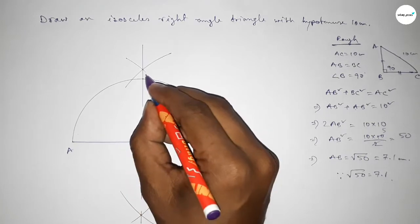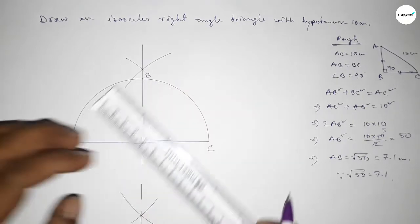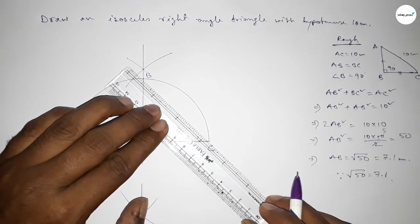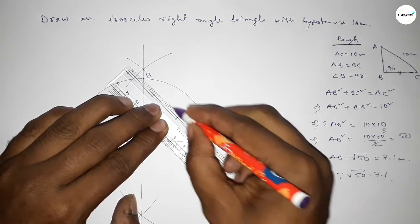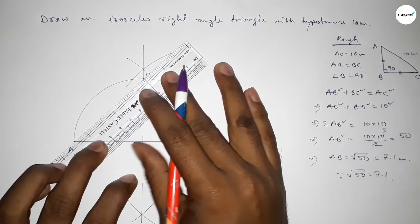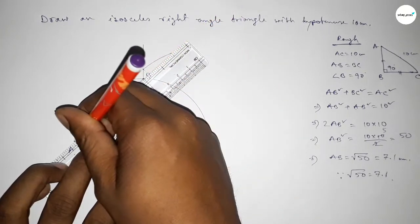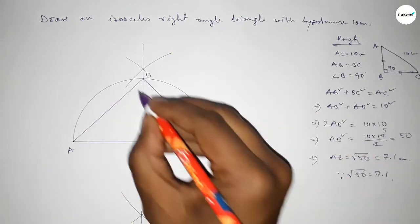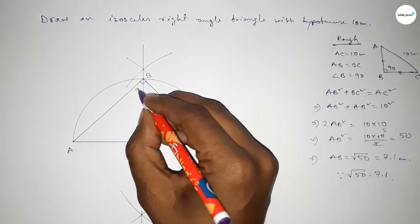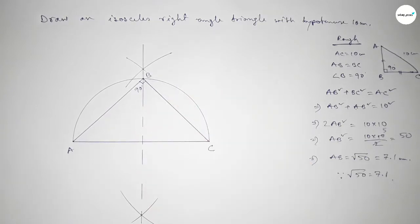Which meets the bisector and semicircle at a point B. Now joining first B and C, then joining A and B. And we know that angle in a semicircle is always 90 degrees.